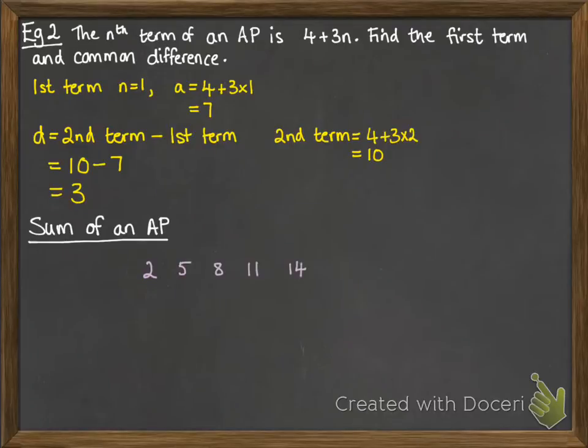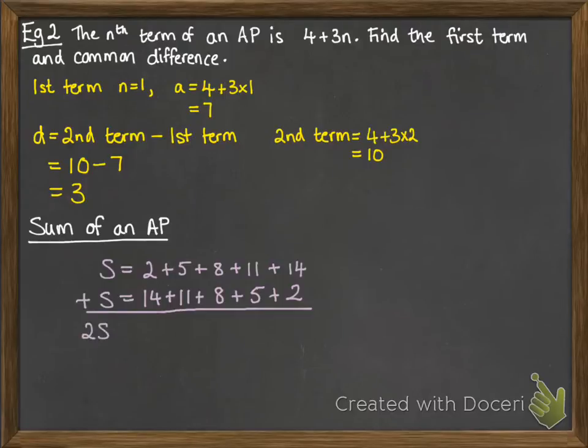Next section is the sum of an arithmetic progression. Now, consider this sequence that we've got here: 2, 5, 8, 11, 14. And if you wanted to add up the first 5 terms of that sequence, you would talk about the sum of them being like this. Now, we can also rewrite that backwards. It would be the same thing if you added it up. It doesn't matter what order you add them in. But if we rewrite this backwards, you can see this interesting result.